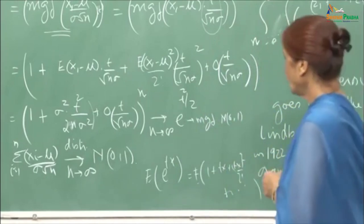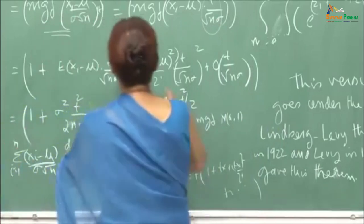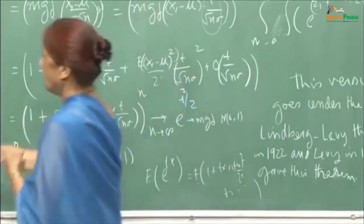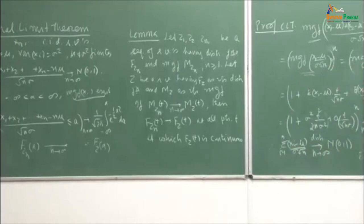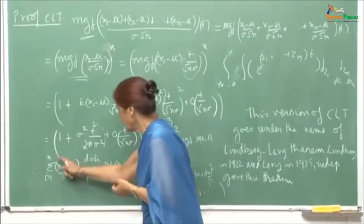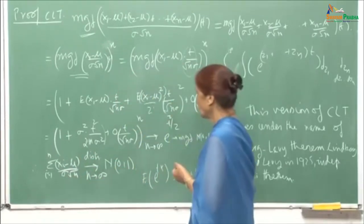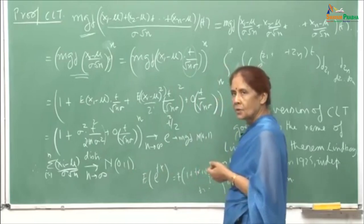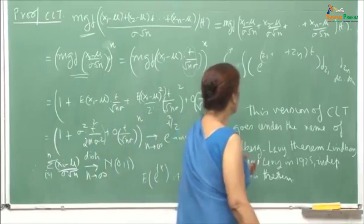So we have shown that the MGF of the standardized sum (Σxᵢ − nμ)/(σ√n) converges to the MGF of a standard normal variate. Therefore, by the lemma, this random variable converges to N(0,1) in distribution as n → ∞. Using the MGF really simplifies the proof.